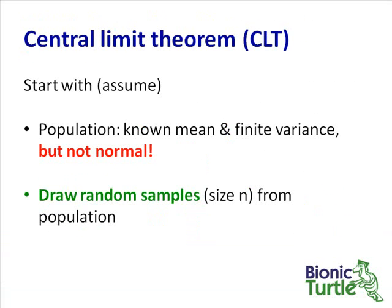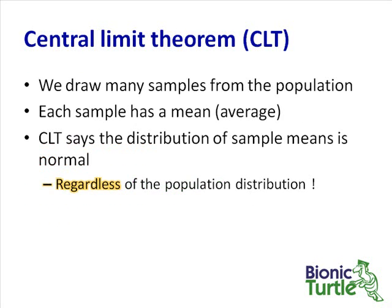And what it says is we start with the idea that we have a population of known mean and finite variance, but that population does not need to be normally distributed. That's the interesting part. And then we draw random samples from that population.